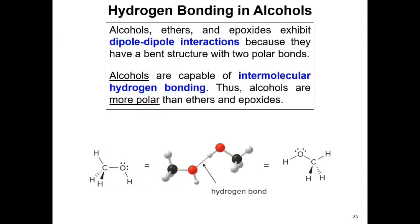Based on the chemical structure of alcohols, ethers, and epoxides, you can see that these organic molecules are polar molecules. They exhibit dipole-dipole type of intermolecular forces, which gives them a higher melting point and boiling point compared to hydrocarbons like alkanes, alkenes, and alkynes.